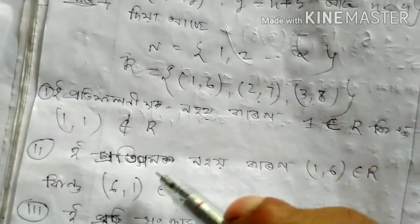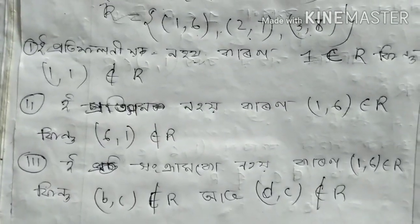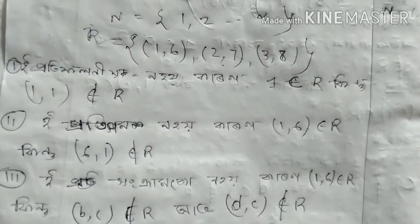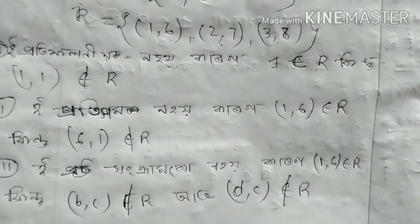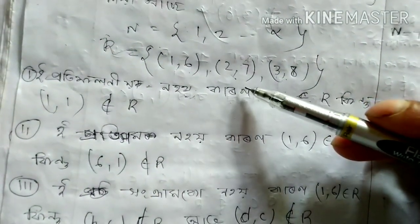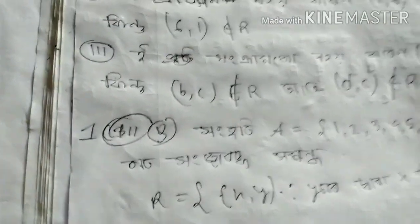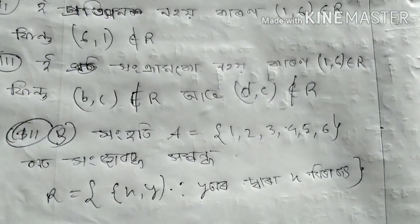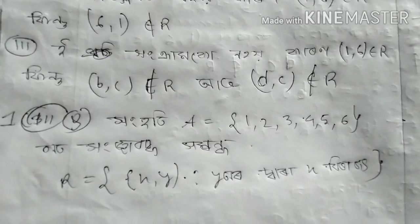So this is 6,1 does not belong to R. This is not a good thing. If there is 1,6 belonging to R, this is not a good thing. So if there is 2,6, then it is 6,2. So this is not a good thing. The number of questions is 1, 2, 3, 4, 5, 6. This is not a good thing. It is interesting.